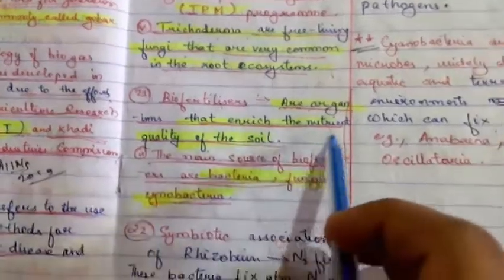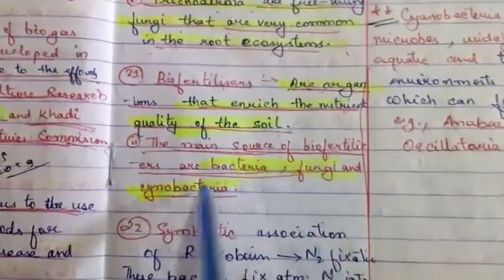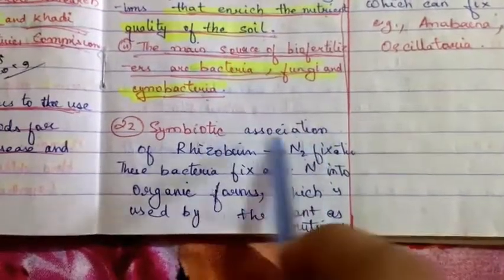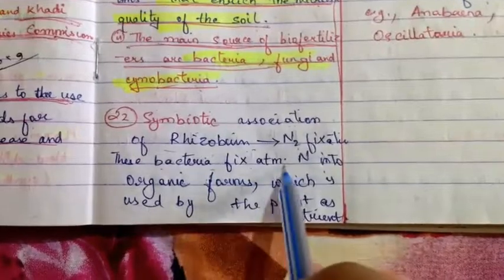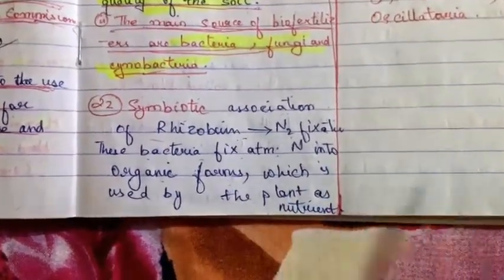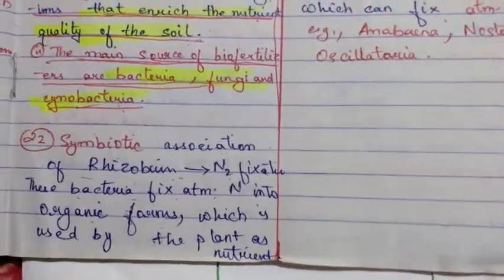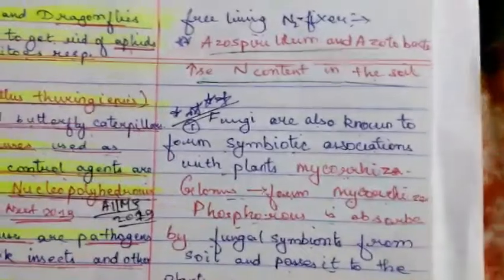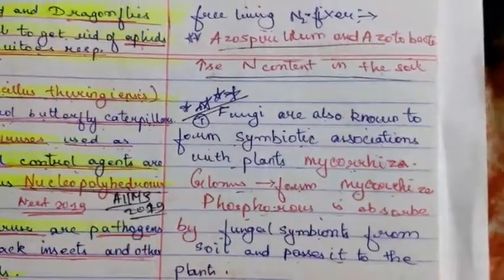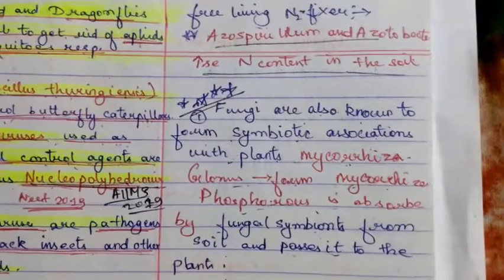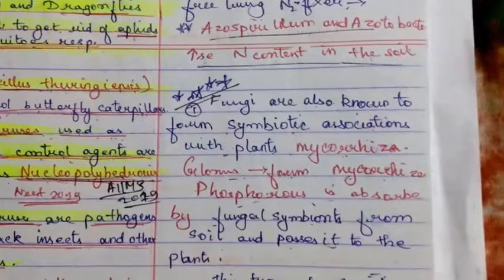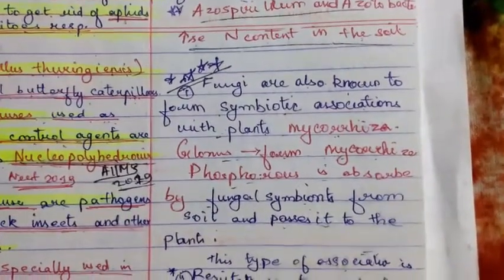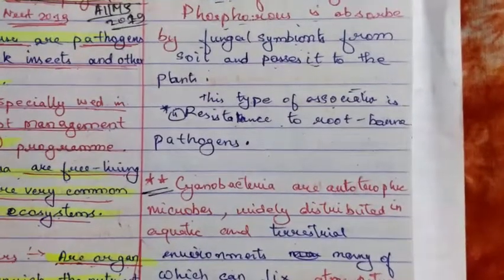Biofertilizers are organisms that increase the nutrient quality of the soil. The main sources of biofertilizers are bacteria, fungi, and cyanobacteria. Rhizobium forms a symbiotic association for nitrogen fixation — these bacteria fix atmospheric nitrogen into organic forms used by the plant as a nutrient. Free-living nitrogen fixers such as Azospirillum and Azotobacter increase nutrients in the soil. Fungi known as mycorrhizae form symbiotic associations with plants. Glomus forms mycorrhizae and absorbs phosphorus from the soil and passes it to the plant, and also provides resistance to root-borne pathogens.